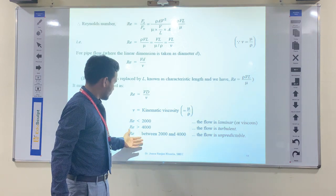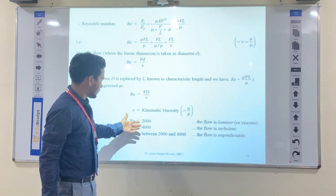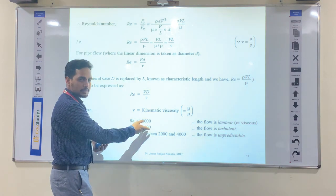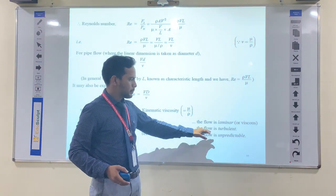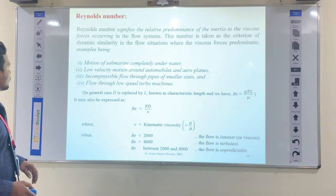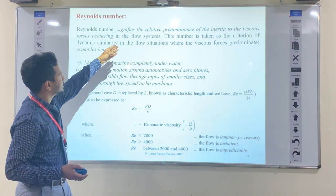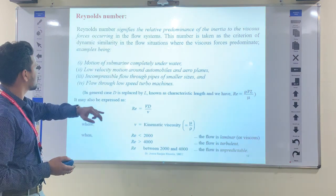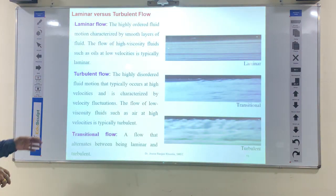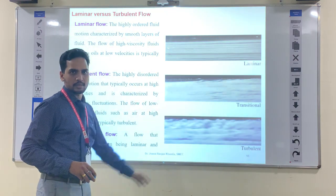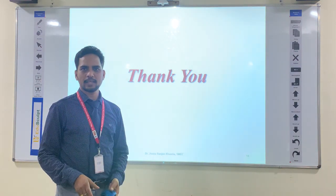We have discussed laminar flow, turbulent flow, and transitional flow with their Reynolds number ranges: less than 2000 is laminar flow, beyond 4000 is turbulent flow, and 2000 to 4000 is the unpredictable transition flow. The Reynolds number signifies the relative predominance of inertia force to viscous force in the flow system. This concludes the tutorial — thank you for attending, and if you have any doubt you can ask.